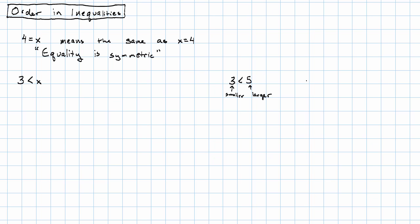If we wanted to write those numbers in the opposite order, well, we would say 5 is greater than 3. Because now we have the larger number on the left and the smaller number on the right.